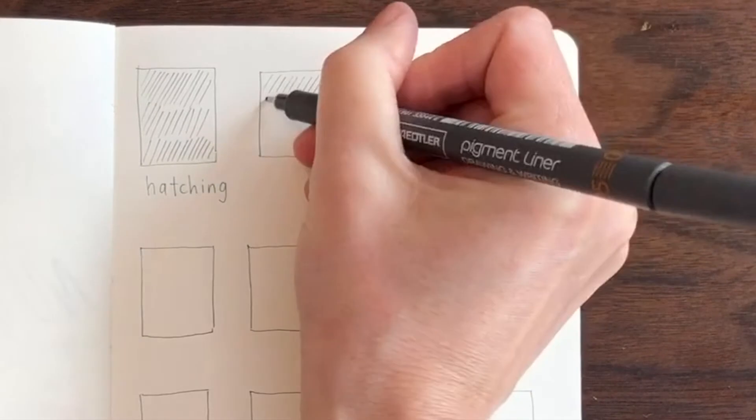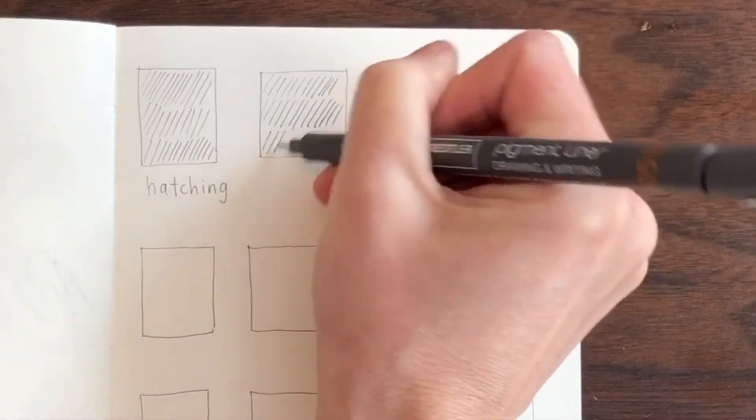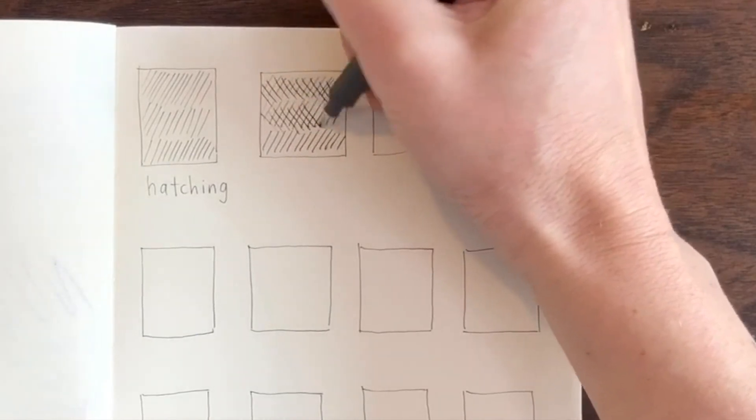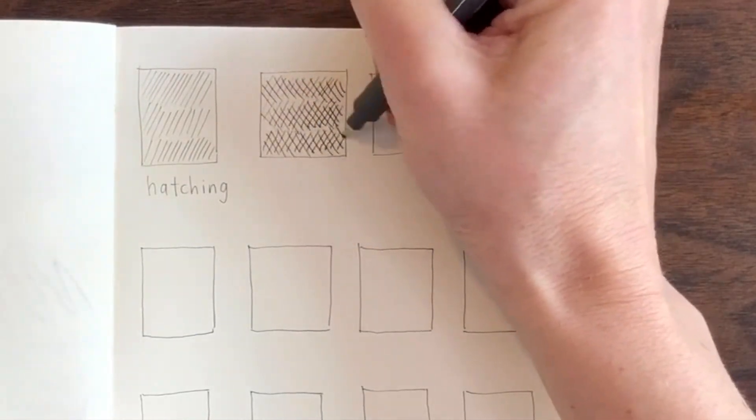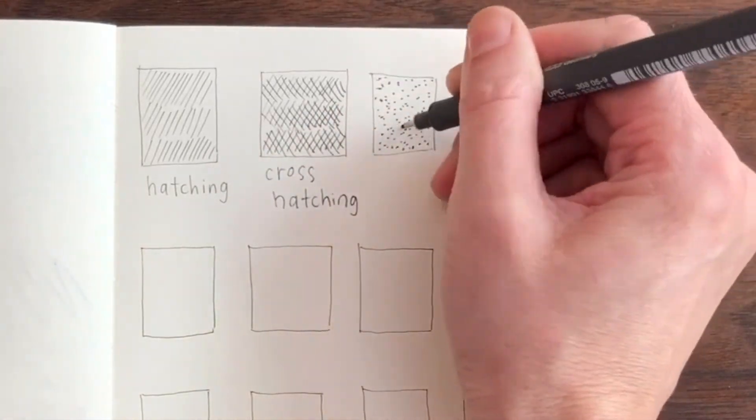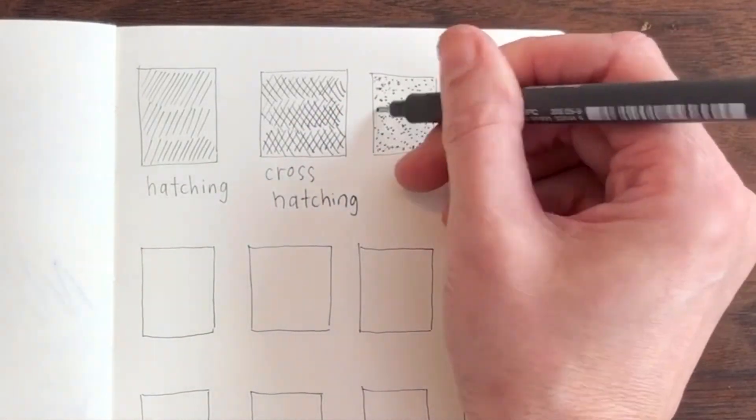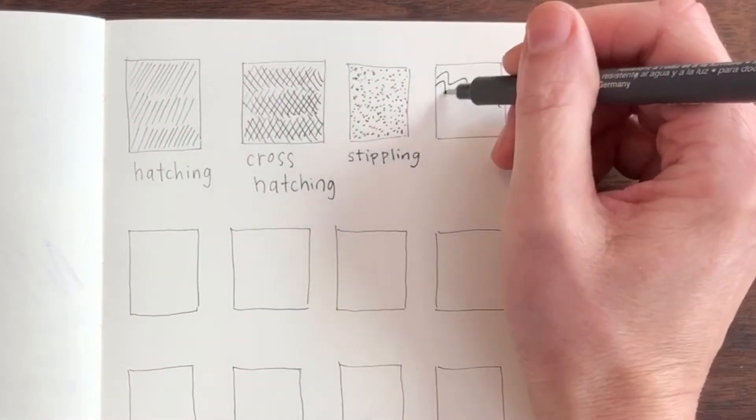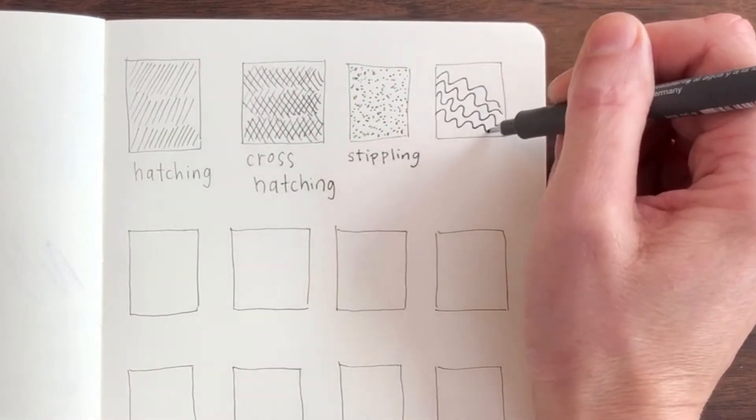This first one is a series of straight lines and this mark is called hatching. If you take those straight marks and make them again but this time cross over them so you're making a bunch of little crisscross marks this is called cross hatching. These little tiny dots take a very long time. This is called stippling. You can do a lot of interesting drawings with lines like this.